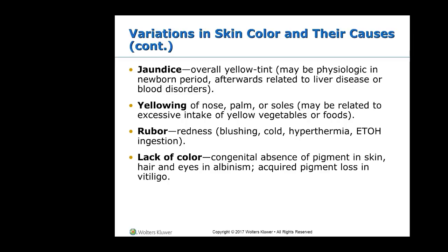Be careful: if you see a child with an orange tint — the tip of their nose or palms of their hands are orange — ask about their food intake. If they're eating a lot of carrots or squash or orangish baby food, that can look a little bit like jaundice, but it's not really jaundice.